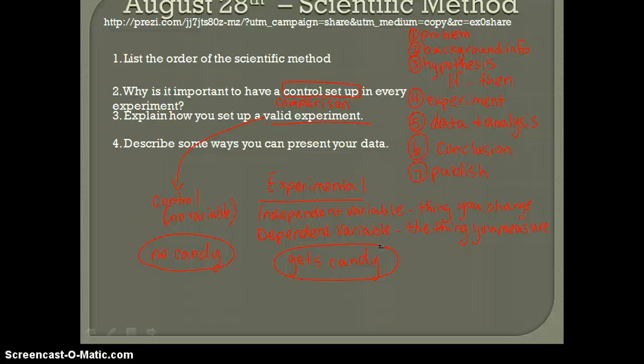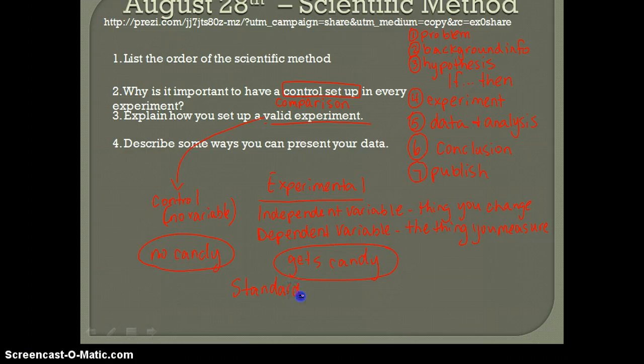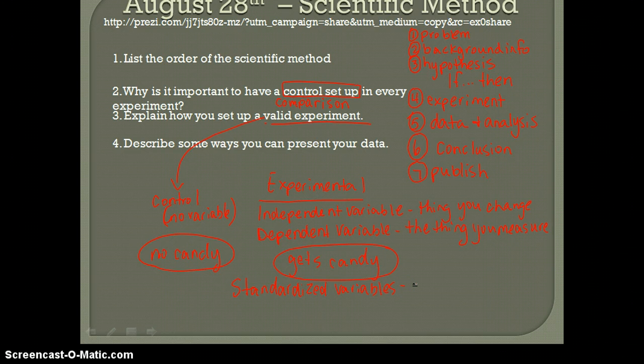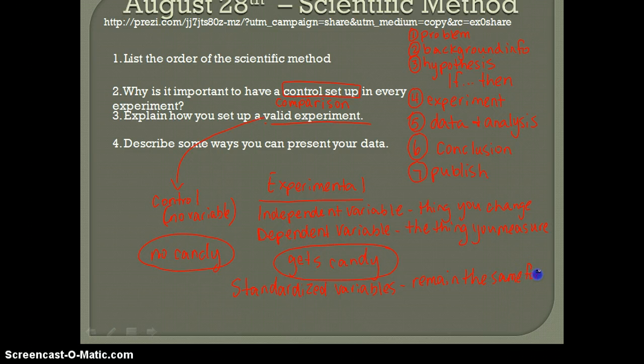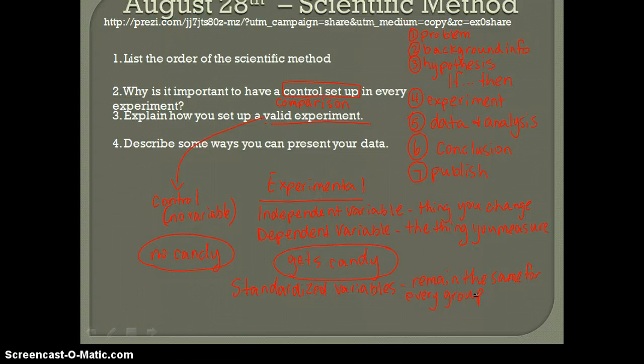There are also called standardized variables. And standardized variables are the things you keep the same for every group. So things like maybe what they ate or drank that morning, how much sleep they got, how much did they study, all of those things. So standardized variables remain the same for every group. And maybe my study is on sugar, so that's why I gave them candy. But I might give a group a placebo where it's actually sugarless candy and try to see if there's any difference there. A placebo is a term that just means you're giving them a fake of whatever your independent variable is.